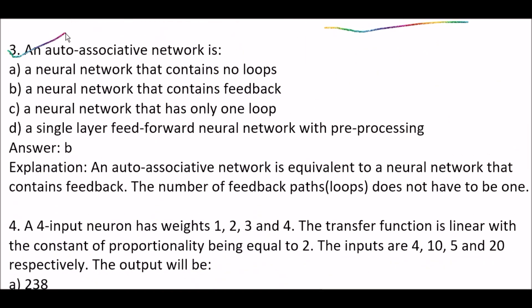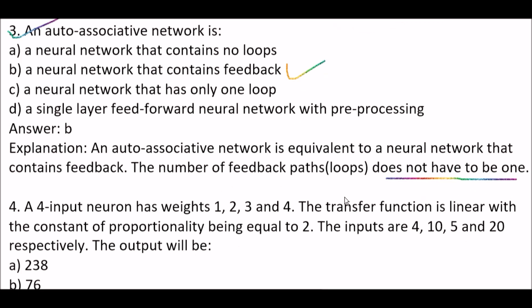Next question: an auto-associative network is — Option A: a neural network that contains no loops. Option B: a neural network that contains no feedback. Option C: a neural network that has only one loop. Option D: a single layer feed forward neural network with preprocessing. The right answer is option B: an auto-associative network is a neural network that contains feedback, because the number of feedback paths or loops does not have to be one.